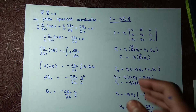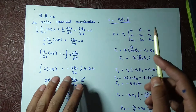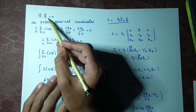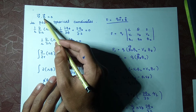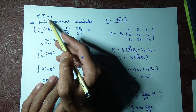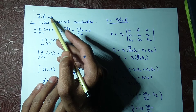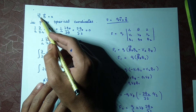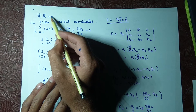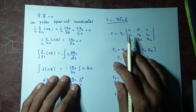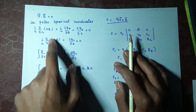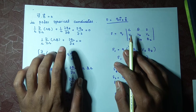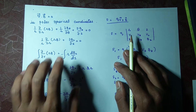For our magnetic mirror case, del·B equals zero — the divergence equals zero. It diverges then converges. For our magnetic mirror we have del·B = 0. In Cartesian coordinates we can write it as partial by partial x, partial by partial z, but now we have to write this in polar/cylindrical coordinates.